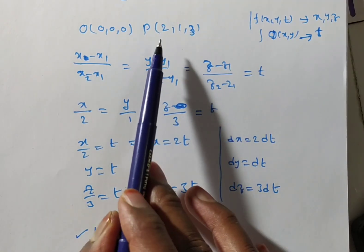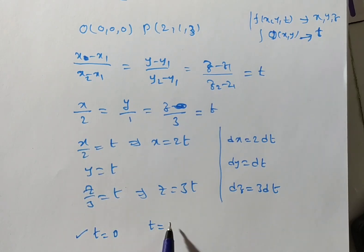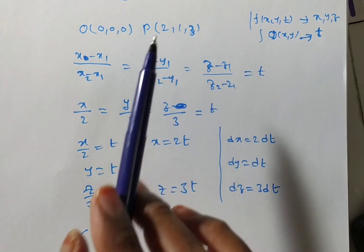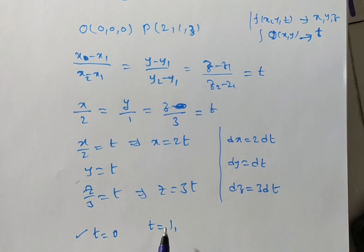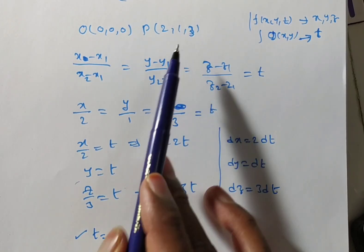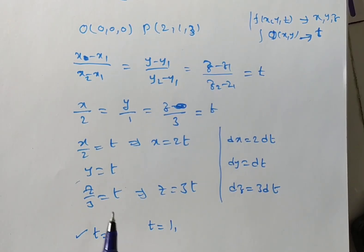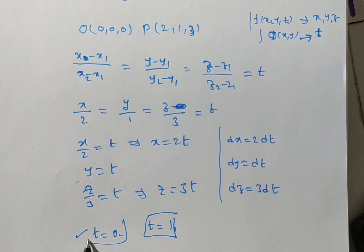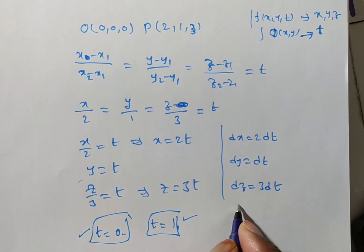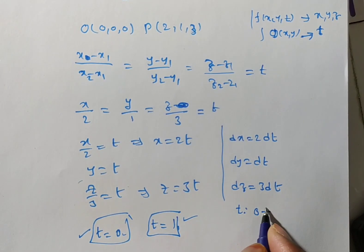Next, I want upper limit. Upper limit means, put x equals 2. 2 by 2 is 1. So, t equals 1. Next, y equals 1. You substitute upper limit. Then, you will have t is 1. Right, correct only. Next, z equals 3. 3 by 3 is t equals 1. Yes, t equals 1 is the upper limit. And t equals 0 is the lower limit we have. So, t is moving from 0 to 1.